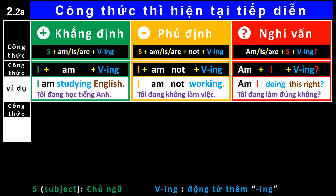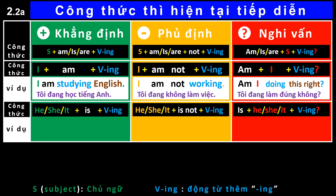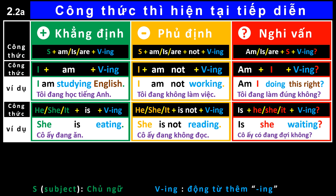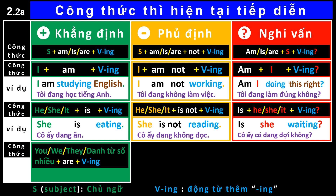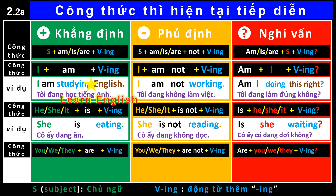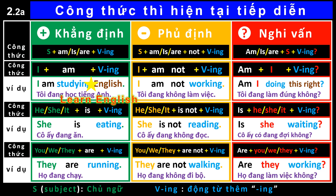Formula. For example: She is eating. She is not reading. Is she waiting? Formula. For example: They are running. They are not walking. Are they working?